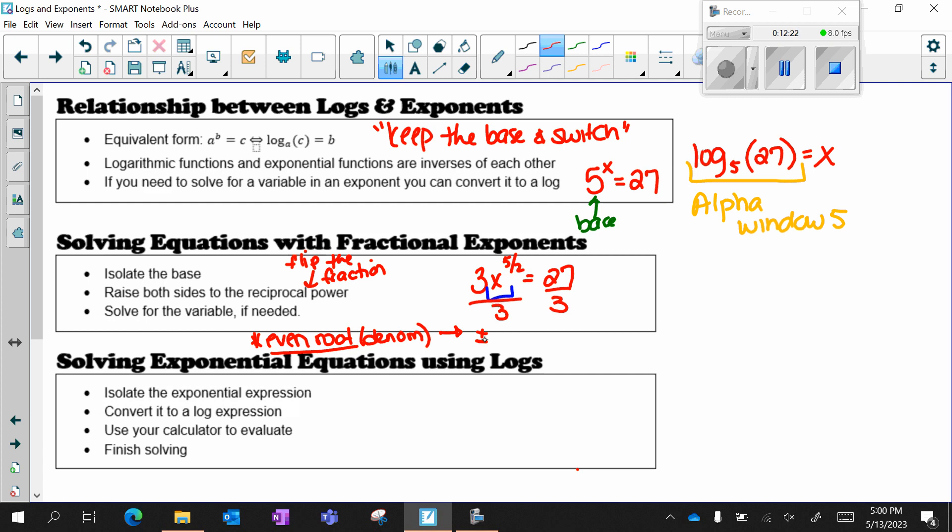And then lastly, when we're solving exponential equations, we always want to isolate the exponential expression. And then we're going to convert it to a log, which is keep the base and switch like we did up above. And then from there, you're going to use your calculator. If it's algebraic, that's when you're going to use alpha window 5. But remember, if it's not algebraic, we can always use y1, y2 and find our point of intersection on the graph.